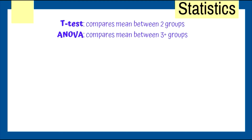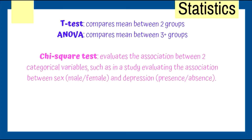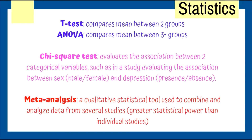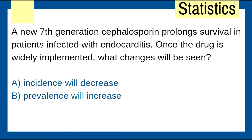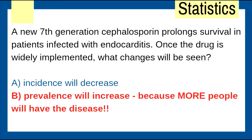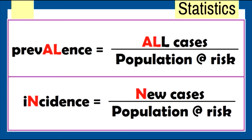Some definitions: t-tests compare means between two groups; ANOVA compares means between three or more groups. Chi-square test evaluates the association between two categorical variables. Meta-analysis is a qualitative statistical test used to combine and analyze data from several studies. A new seventh-generation cephalosporin prolongs survival in endocarditis patients — once widely implemented, prevalence will increase because more people live with the disease longer, while incidence refers to new cases.